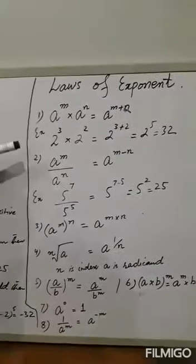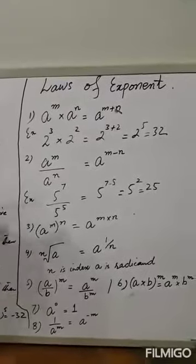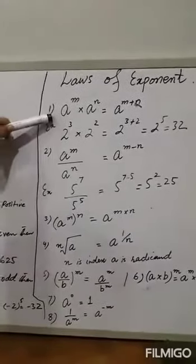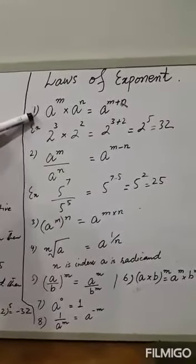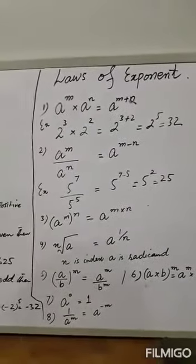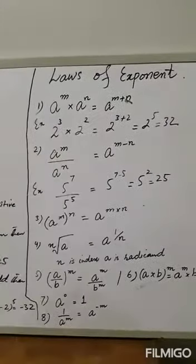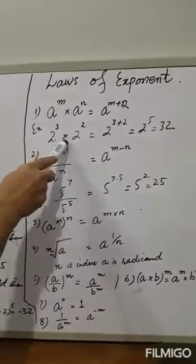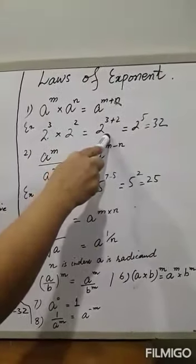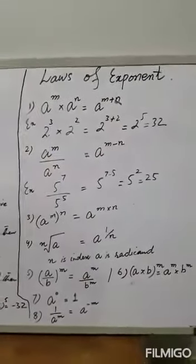Now we move towards the laws of exponents. These laws save time when solving large terms. The first law is the law of product of powers: A raised to power M times A raised to power N equals A raised to power (M plus N). For example, 2 cubed times 2 squared — the bases are the same, so the powers add: 3 plus 2 equals 2 raised to the power 5, which equals 32.